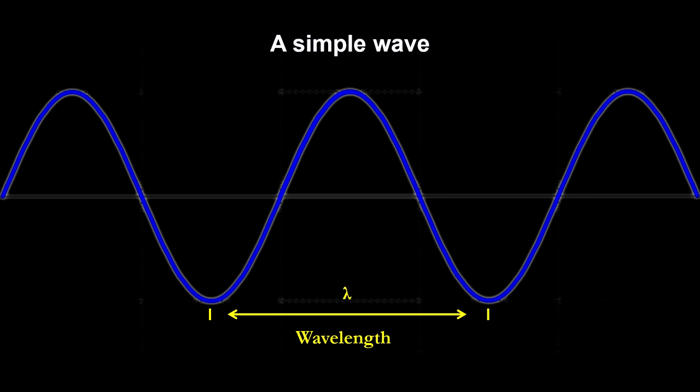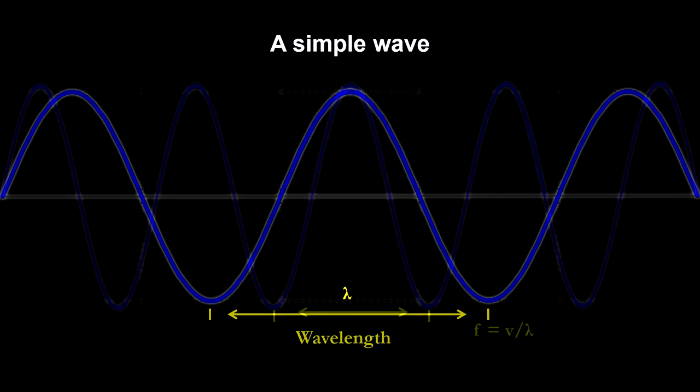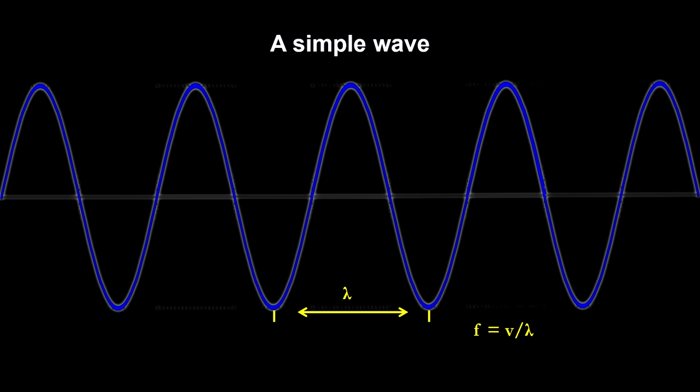Here's a simple wave. It has a repeating cycle, a wavelength, and a frequency in cycles per second.